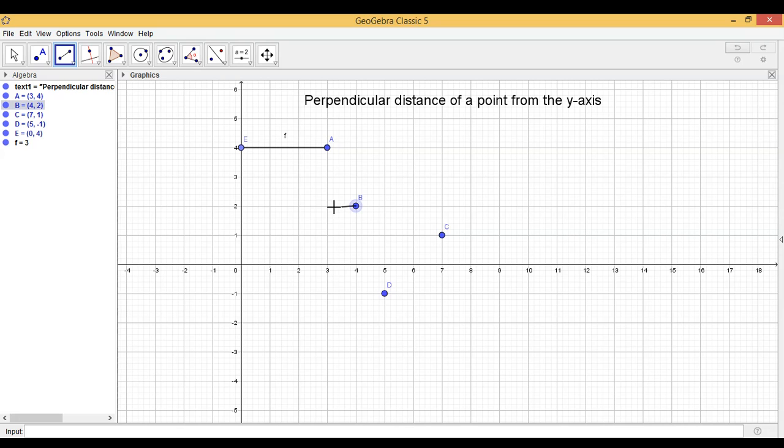So let us see for the point B. Coordinates of point B are 4, 2. And perpendicular distance of B from the y-axis is 4 units. Similarly,